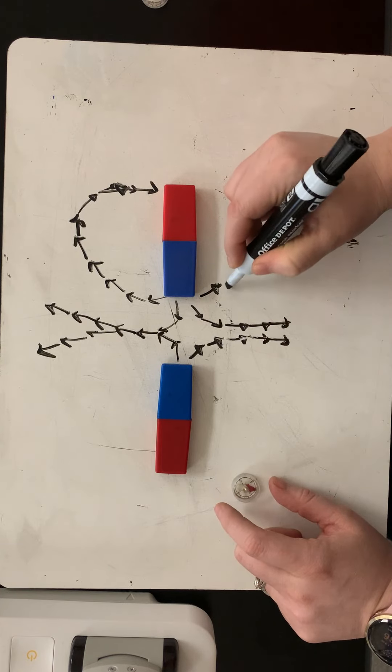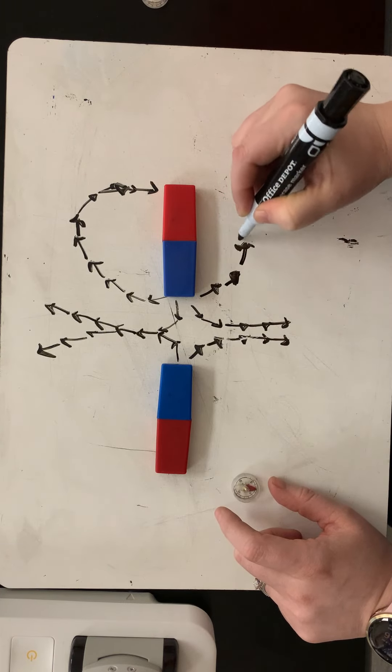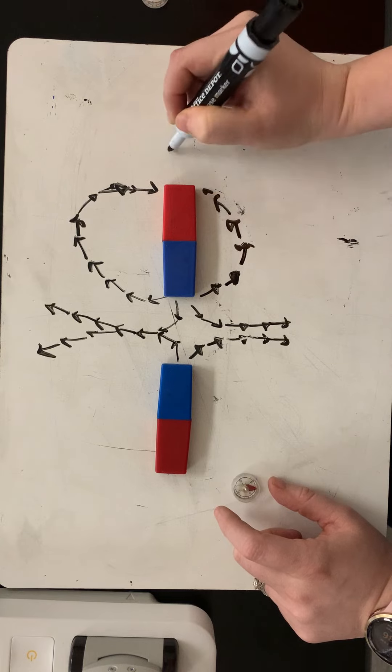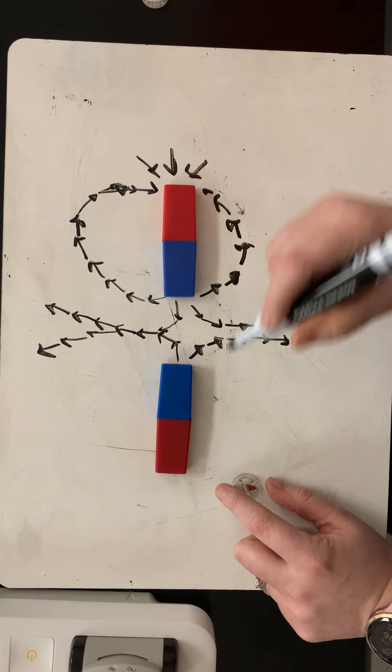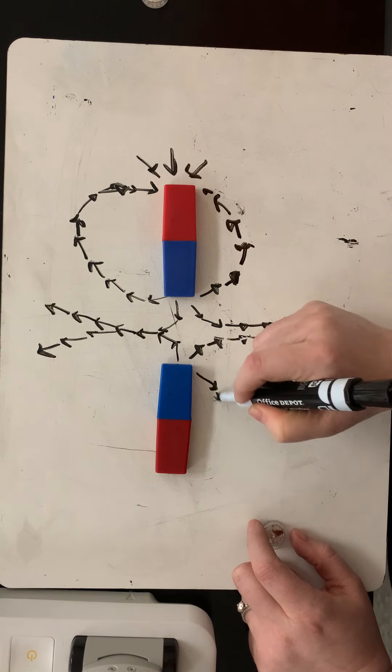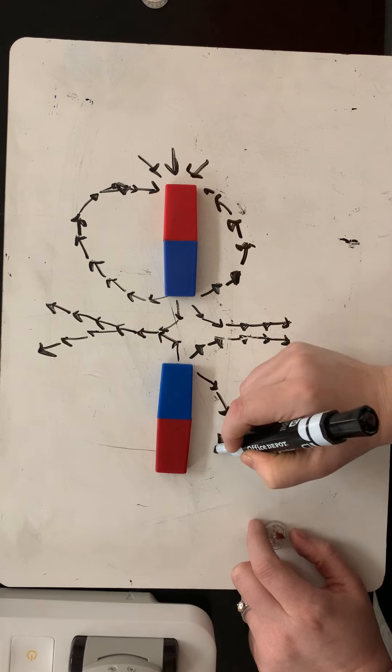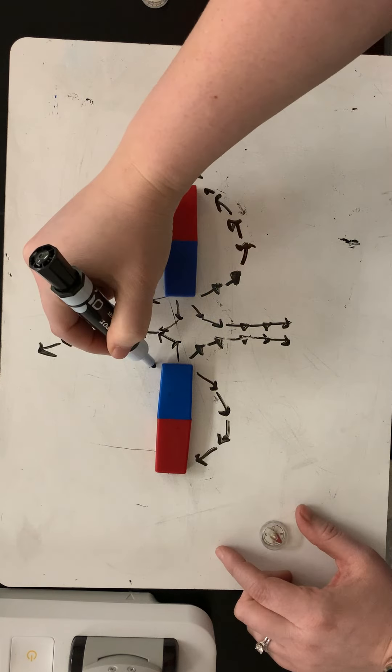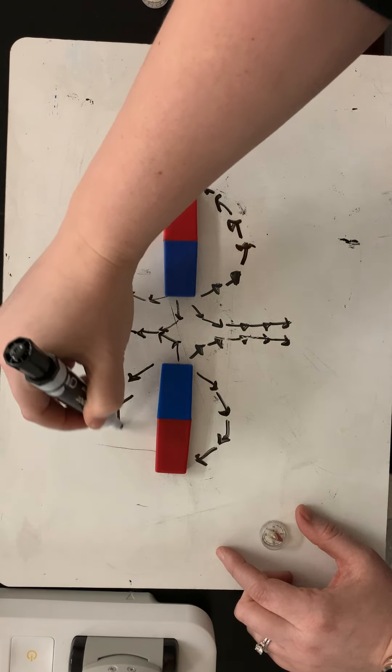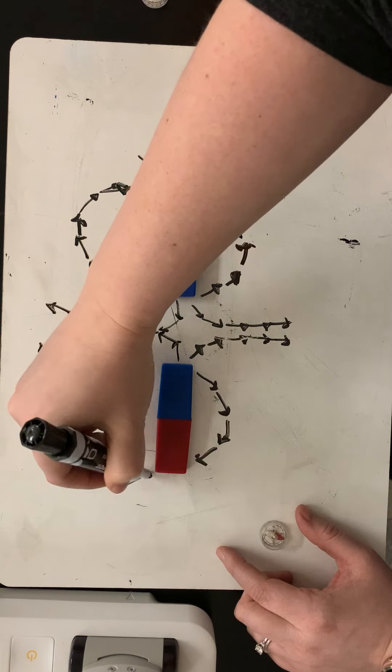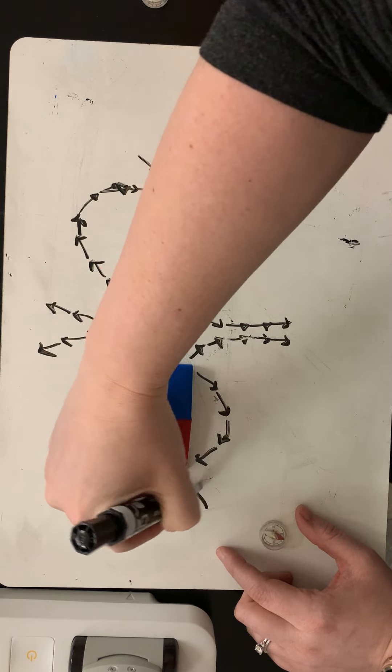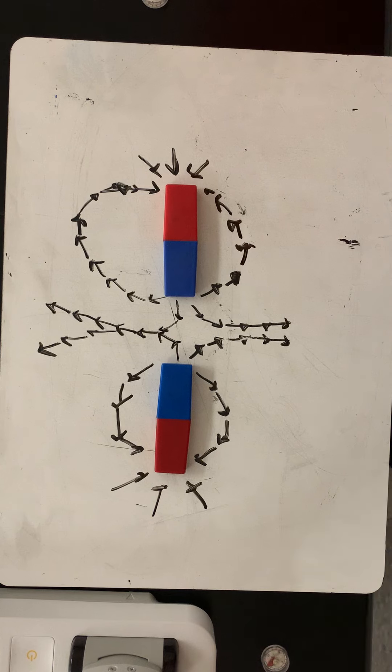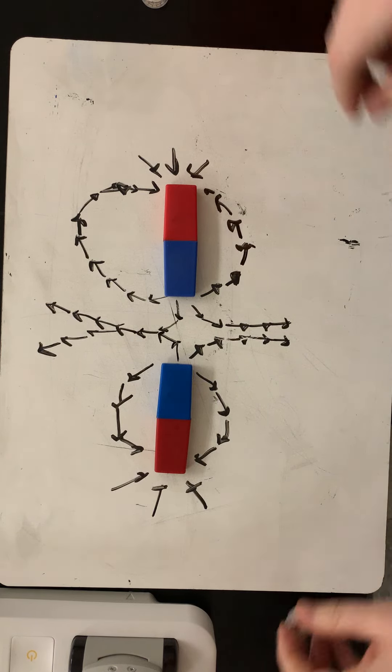And so you'll see this pattern go around just like before, that everything wants to go away from the blue, which we say is the south, and they want to go towards the red, which we call the north. And so this is a general pattern you can draw that scientists call a magnetic field line pattern.